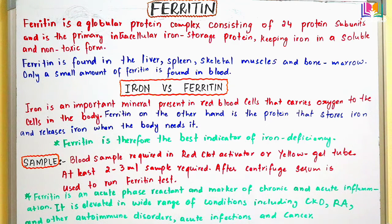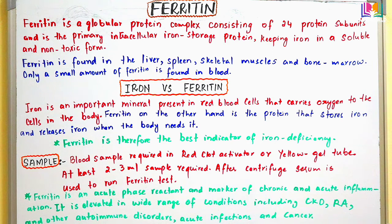First, what is ferritin? The nature or structure of ferritin is that ferritin is a protein by nature — specifically a globular protein, a complex consisting of 24 protein subunits. Globular proteins are also called globoid proteins because their structure is spherical or globe-like. Globular proteins are water soluble, and ferritin is also one of the most common types of globular proteins.